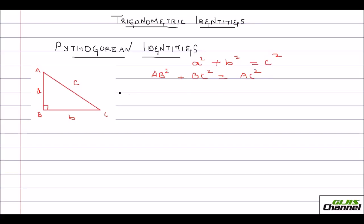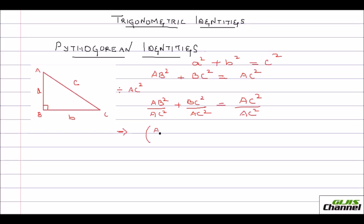Now let's divide throughout by AC², the square of the hypotenuse. Dividing throughout by AC², this becomes AB²/AC² + BC²/AC² = AC²/AC². I can rewrite this by taking the square outside in common, so that would be (AB/AC)² + (BC/AC)² = 1.